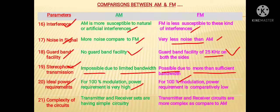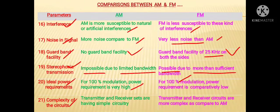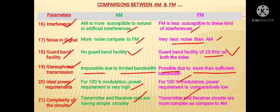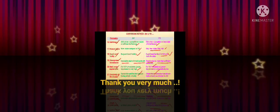In AM, most of the power is wasted in the carrier signal, but that wastage is avoided in FM. Lastly, regarding complexity of circuits, in case of AM the transmitter and receiver circuits have simple circuitry, but in case of FM the transmitter and receiver circuits are more complex compared to AM. So this is all about the comparison points between AM and FM. Thank you very much.